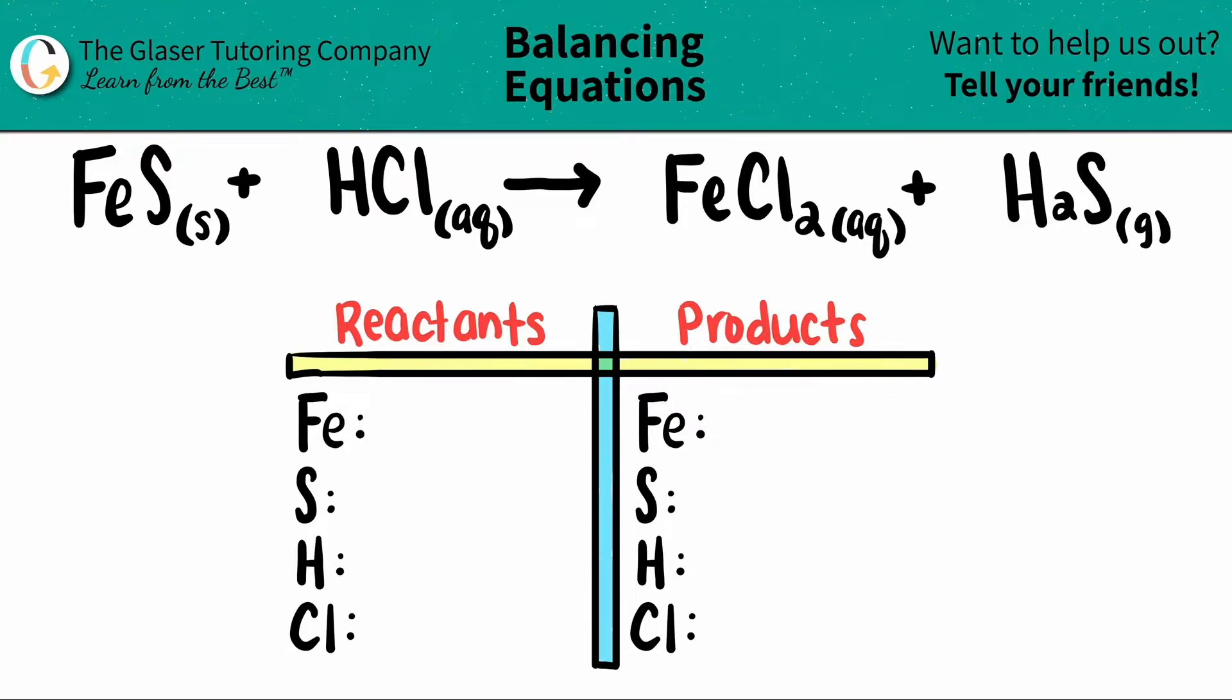Today, we're going to be balancing the equation of iron 2 sulfide, which is FeS, plus hydrochloric acid, which is HCl, and that will produce iron 2 chloride, which is FeCl2, plus hydrogen sulfide H2S.